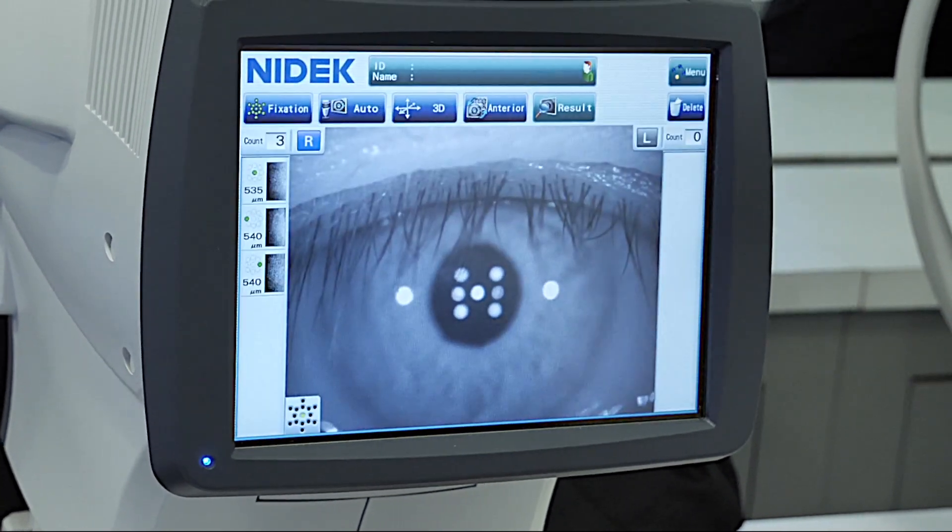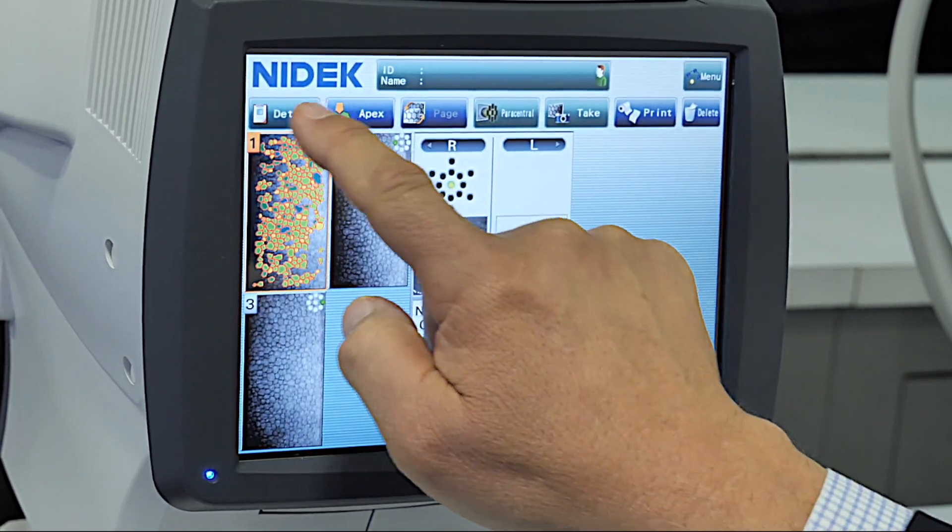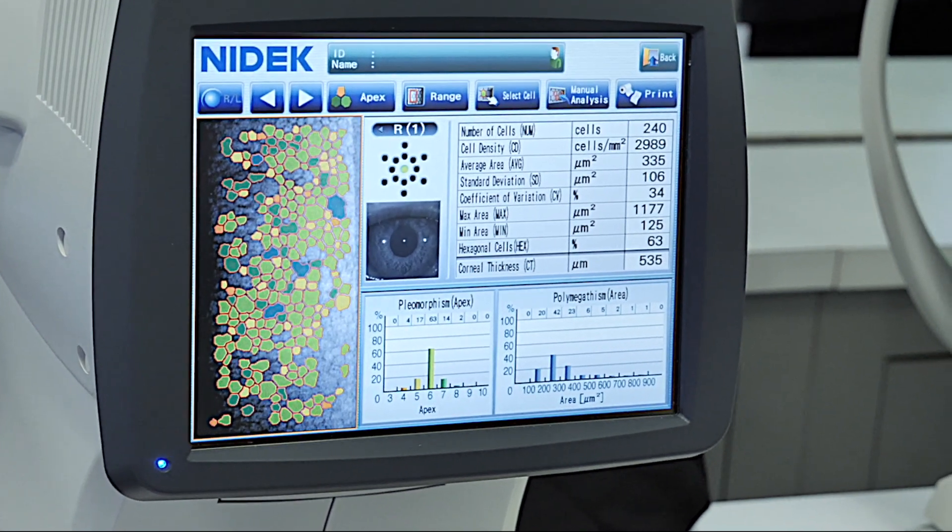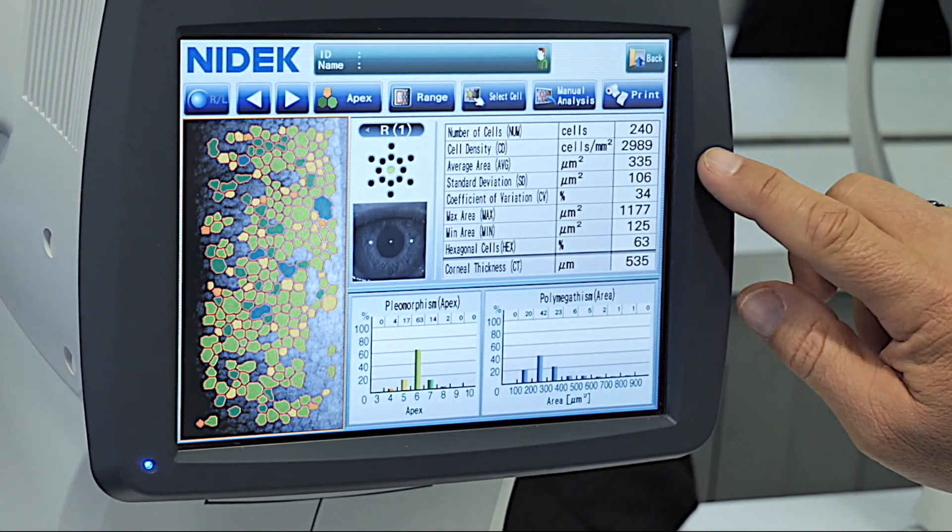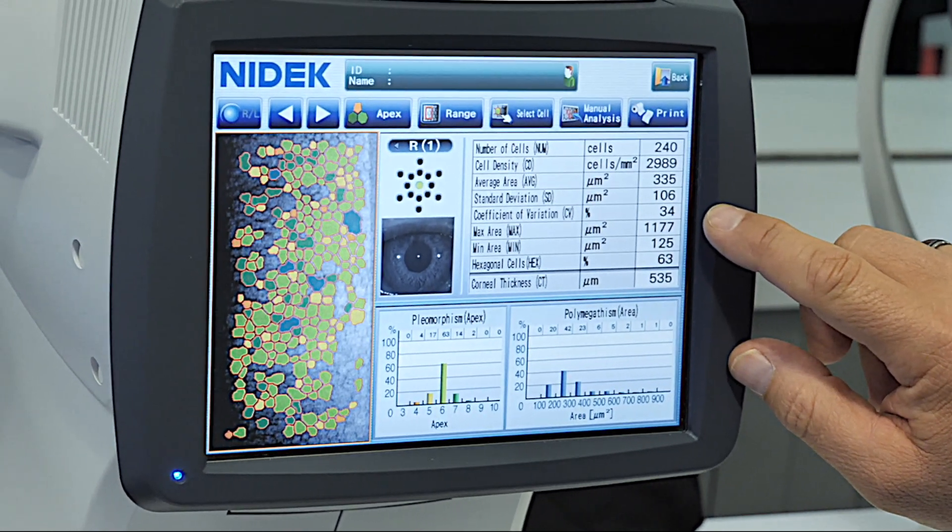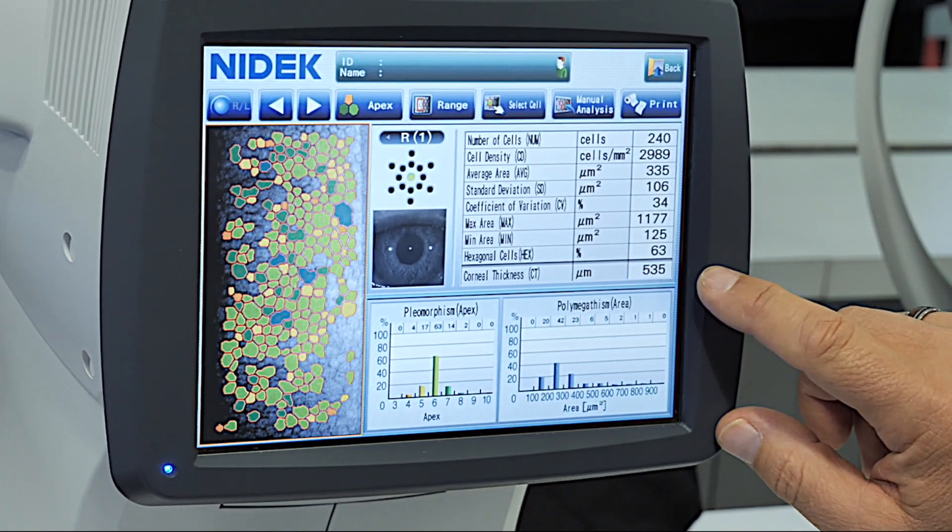After the exam is complete, we're going to look at our results. In the result page, we're going to see the endothelium number of cells, the cell density, the average area, standard deviation, coefficient of variation, the largest cell, the smallest cell, the percentage of hexagonal cells, and corneal thickness.